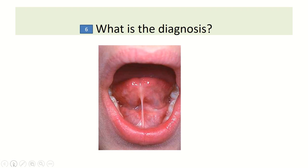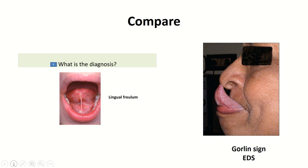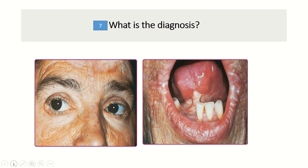What's the diagnosis? This is another finding of lipoid proteinosis: lingual frenum involvement. You can also see lingual frenum involvement in lipoid proteinosis compared with Gorlin's sign in Ehlers-Danlos syndrome.